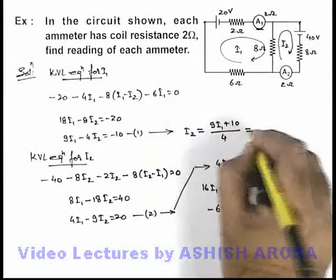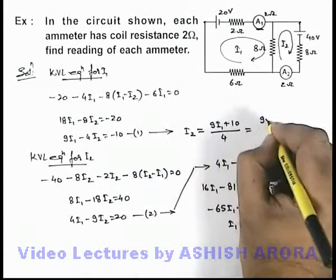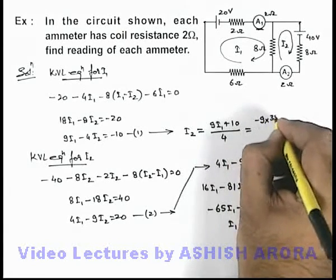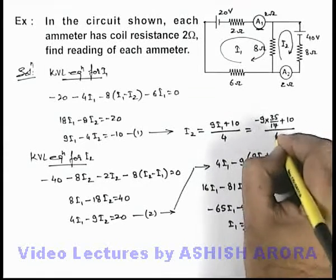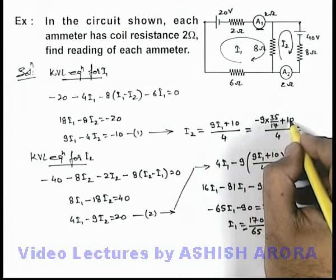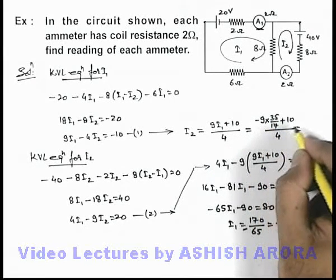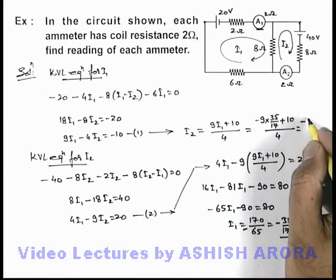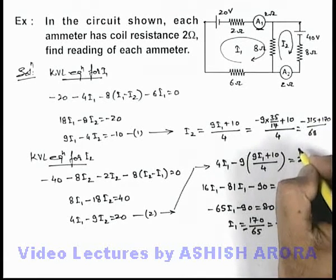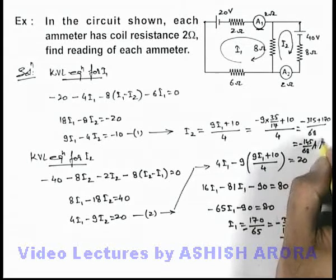If we wish to calculate the value of i2, we substitute the value of i1 over here and we'll get the value of i2. So it'll be: 9 multiplied by (minus 35 by 17) plus 10, divided by 4. On simplifying, the result is: 170 minus 9 into 35, giving minus 315 plus 170, divided by 68. So here I'm getting the result to be negative 145 by 68 ampere. That'll be the answer to this problem.